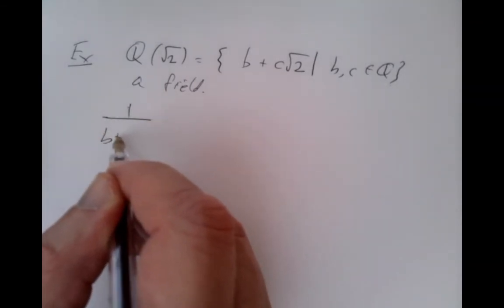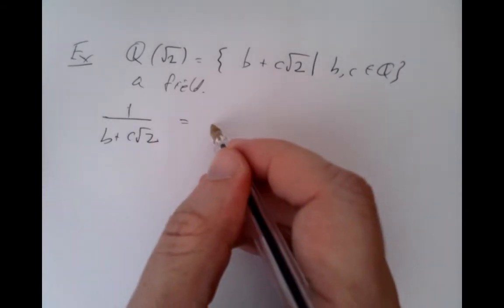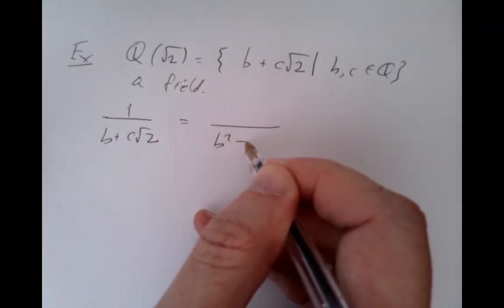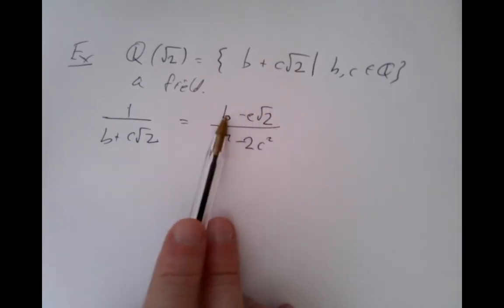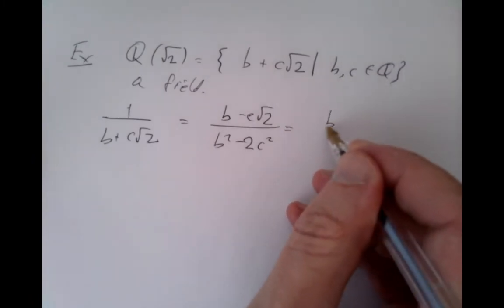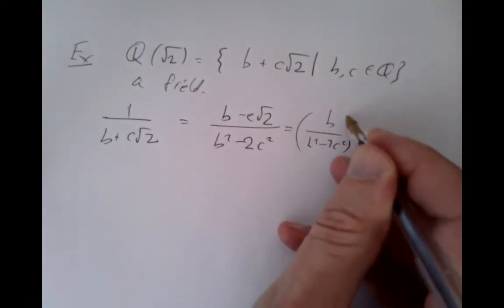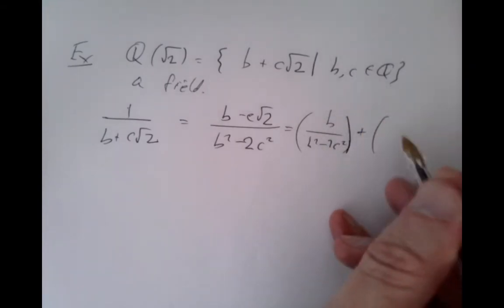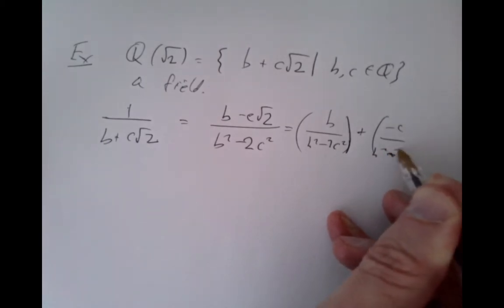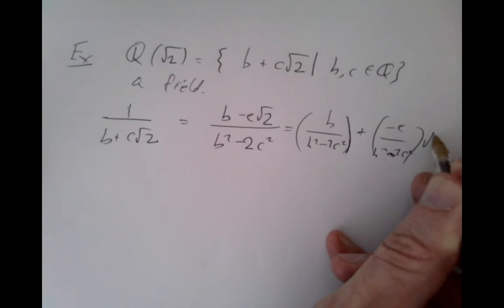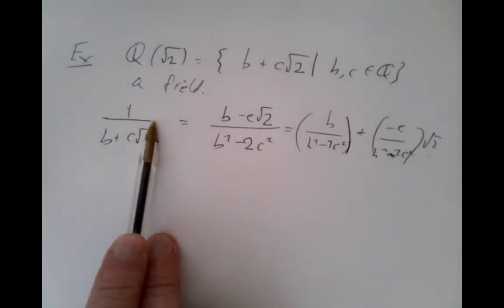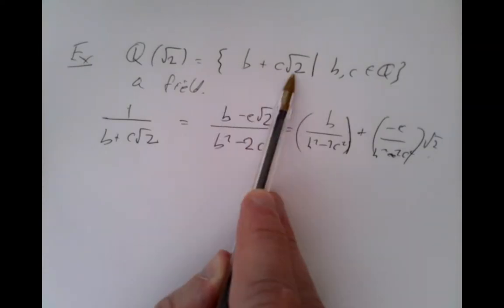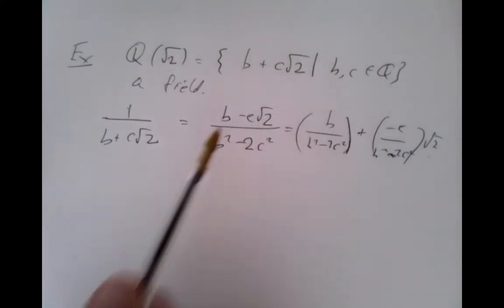For example, if we try to divide, we'd get something like this — we can rationalize denominators. The denominator becomes a rational number, and this is still a number of the same form. We can write it as a rational number plus minus c over (b² − 2c²) times root 2. So it has still the same form: a rational plus a rational multiple of root 2. You can see that it's possible to take reciprocals, multiply two such things together to get another such thing, and add two such things to get another. So it does form a field inside the real numbers.